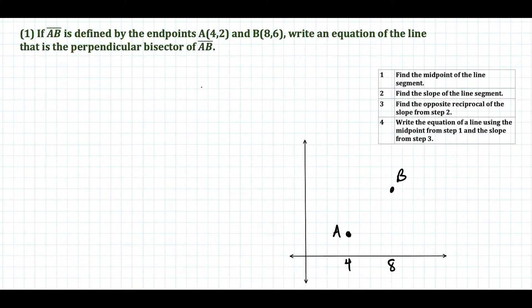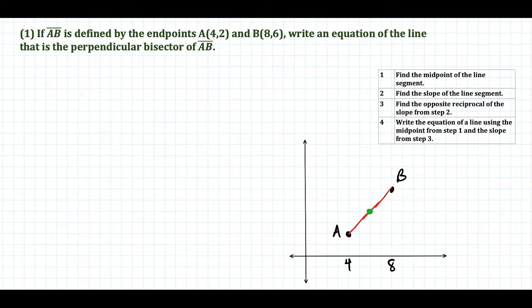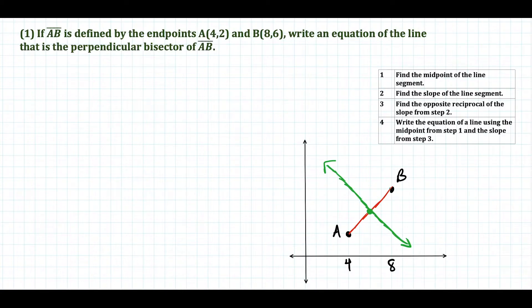The goal here is to write the equation of the perpendicular bisector of AB. The concept is: when you have a line segment, the perpendicular bisector is a line that goes through the middle and is perpendicular to the original line segment. The steps are obvious if you can visualize what's actually happening.